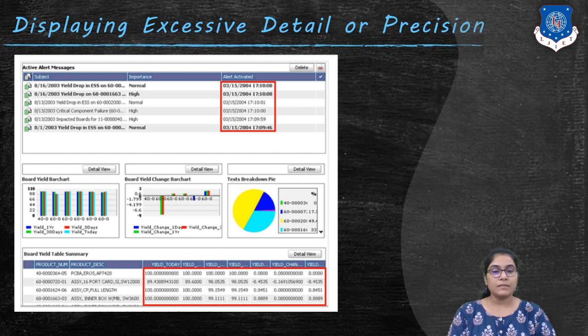Too much detail or measures that are expressed too precisely, say for example, rather than rounding up a floating point value, we show the entire data with all the floating point values, would make it less beneficial.